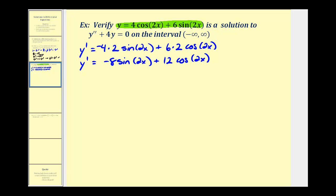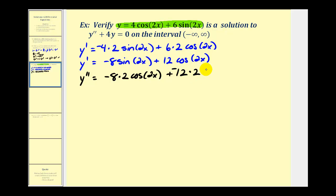Now we need to find y double prime. Y double prime is going to equal the derivative of negative 8sin(2x). We have negative eight times the derivative of sin(2x), which is cos(2x) times two from the chain rule, plus twelve times the derivative of cos(2x). Applying the chain rule, the derivative is negative sin(2x) times two. Simplifying, y double prime equals negative 16cos(2x) minus 24sin(2x).